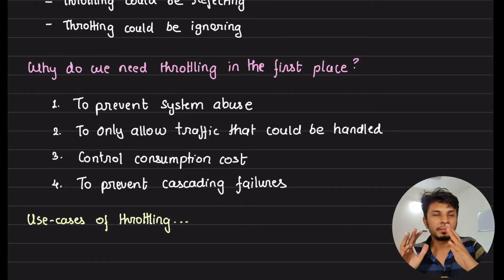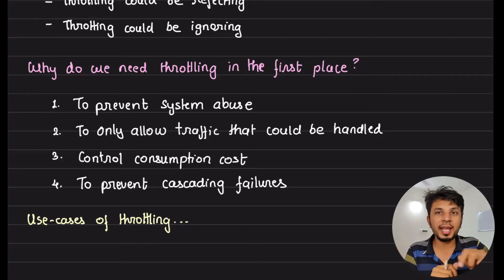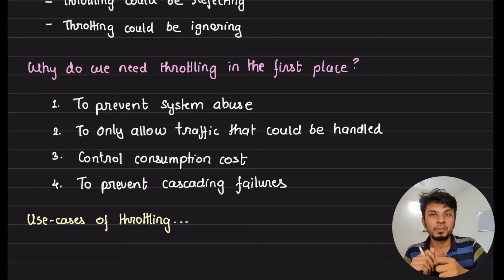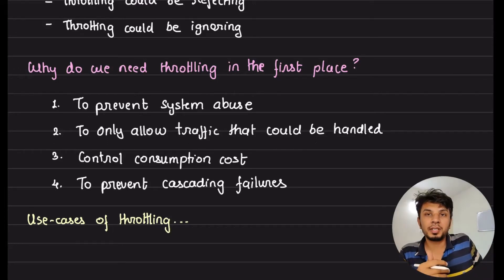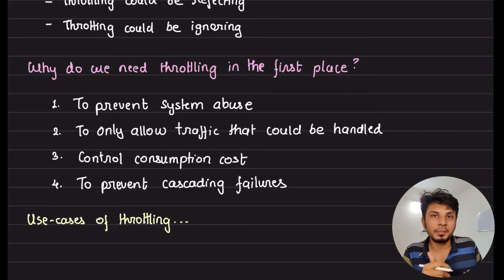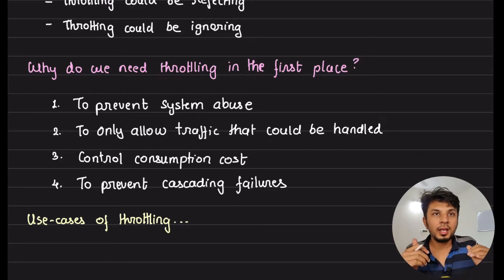In order to prevent your business, product, or service from going down due to a rogue user, you add a rate limiter to ensure your system is not overwhelmed and does not go down.